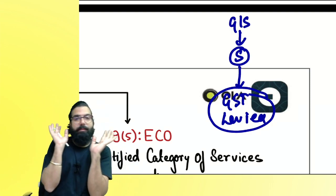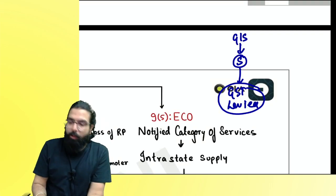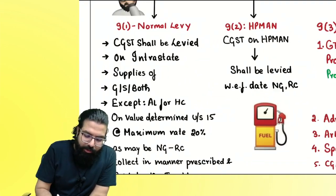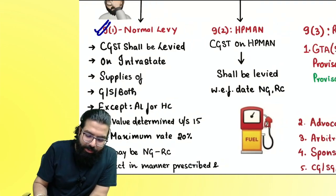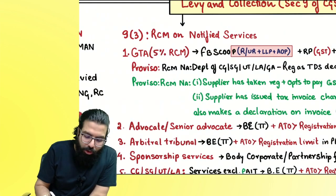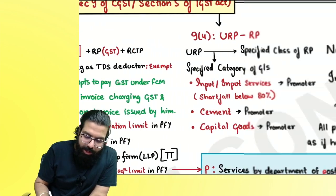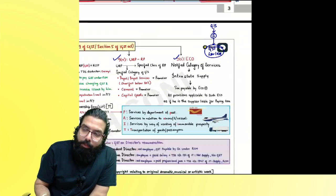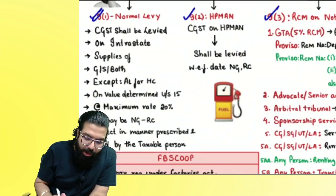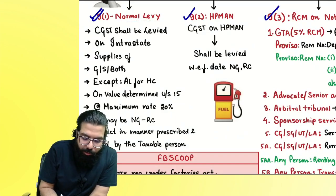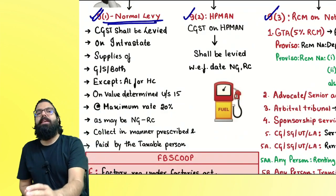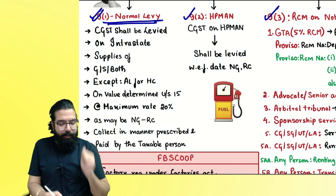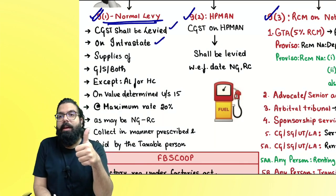We are going to learn section 9 now. Section 9 has sub-sections: 9(1), 9(2), 9(3), 9(4), and 9(5). Section 9(1) talks about normal levy — when will CGST be levied? CGST will be levied whenever there is an intrastate supply of goods, services, or both.